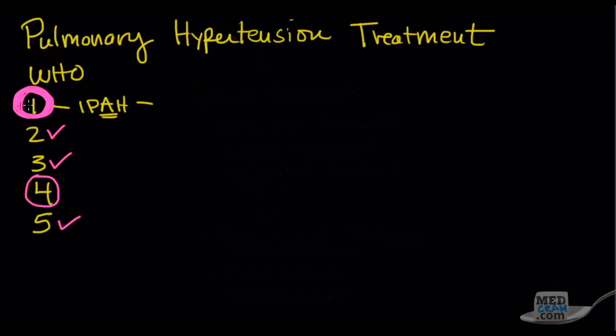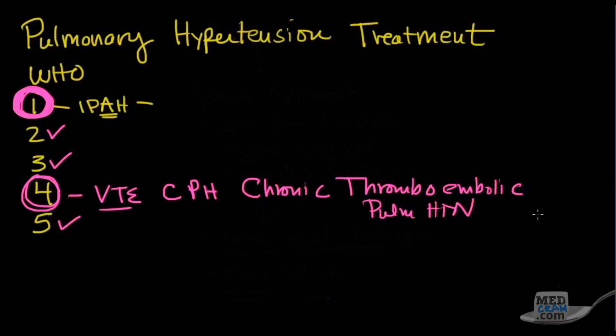One has a whole bunch which we're going to talk about and there is one that is indicated for four. Remember four is for venous thromboembolism or chronic pulmonary hypertension or as it's officially called chronic thromboembolism, abbreviated C-T-E-P-H. Let's talk about number one and the different types of treatments.